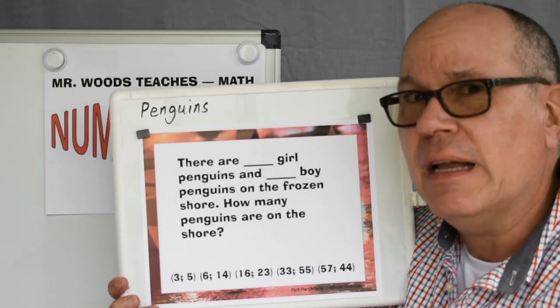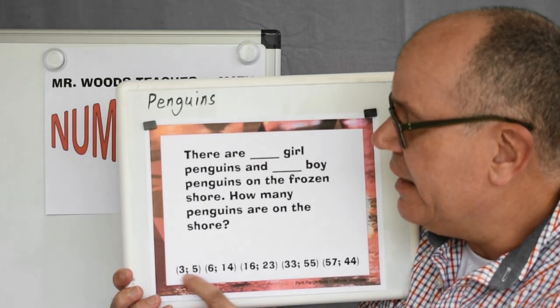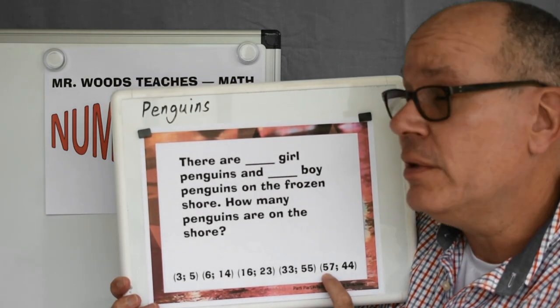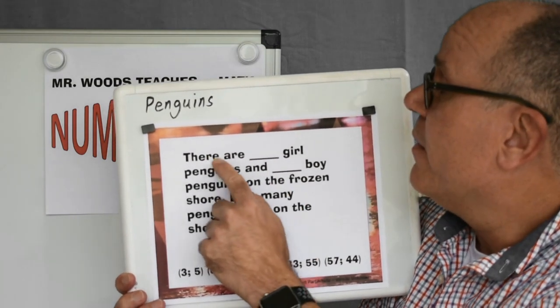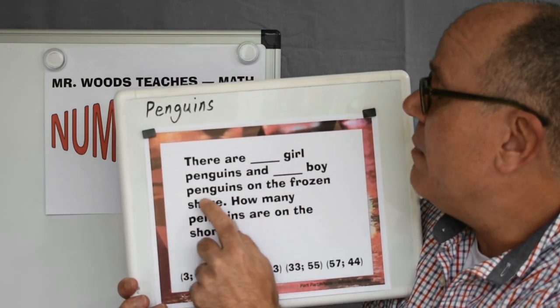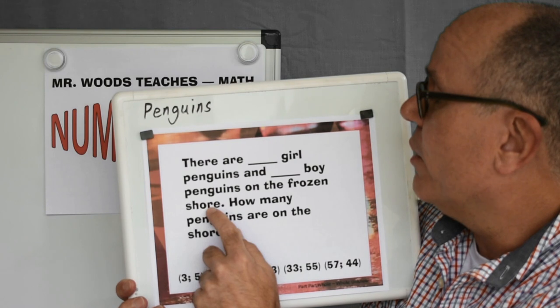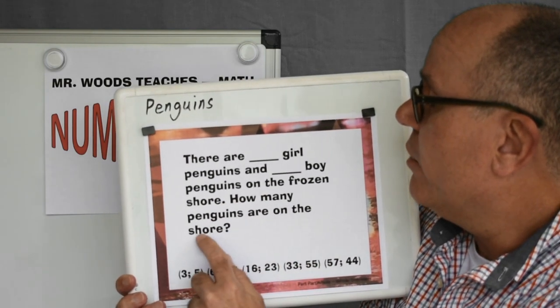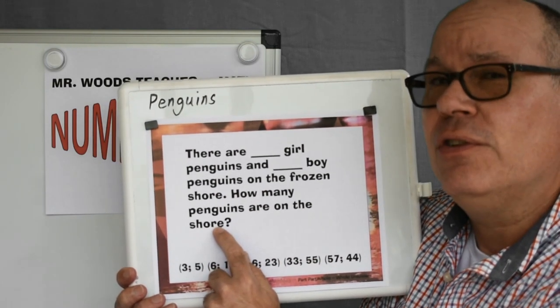How would you do that? Well, you can plug in these numbers, use your own. I'm going to use my own. I'm going to say there are five girl penguins and four boy penguins on the frozen shore. How many penguins are on the shore? How would you do that?